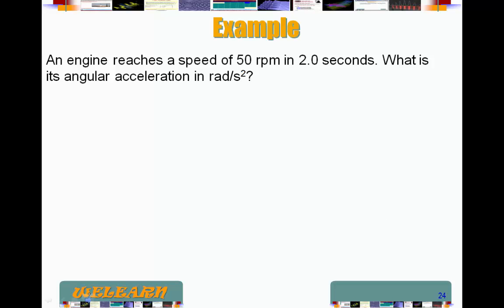Let's work this other example. An engine reaches a speed of 50 rotations per minute, or rpms, in 2 seconds. What is the angular acceleration in radians per second squared? So here they didn't explicitly say it, but the engine is going to reach it from rest. So our initial velocity is 0. Our final velocity is 50 rotations per minute. And our time is 2 seconds.